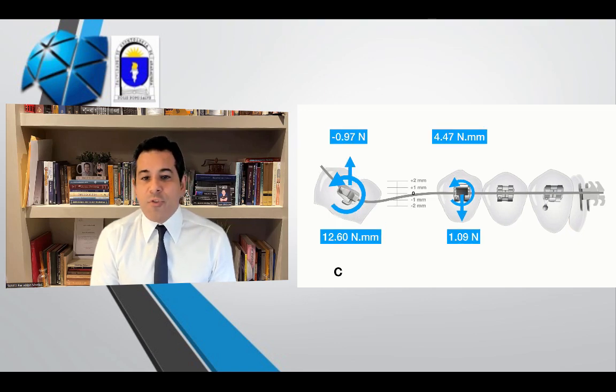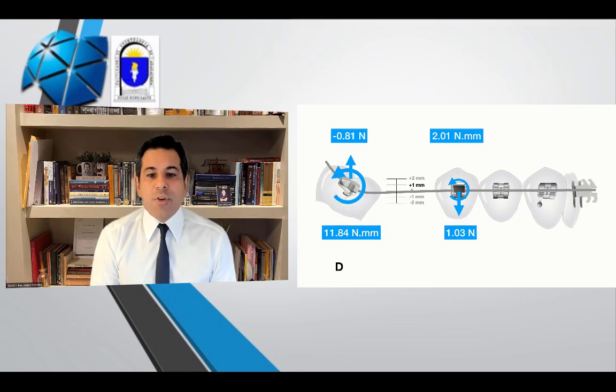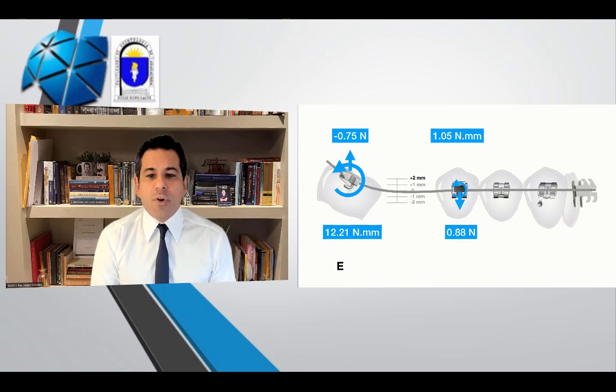However, that force never ceased to exist as the tube was moved occlusally, where the arch wire produced 0.75 newtons or 76 grams of force when it was two millimeters occlusal.